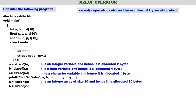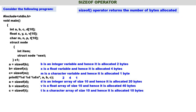Next b is equal to sizeof(v). v is a float array which can store 10 elements. For one element you require 4 bytes, for 10 elements you require 40 bytes. v is a float array of size 10 and hence it is allocated 40 bytes. sizeof(v) is 40, so 40 will be stored in b. c is equal to sizeof(t). t is a character array which can store 10 elements. For one element you require 1 byte, so for 10 elements you require 10 bytes. sizeof(t) is 10, so 10 is stored in c. printf a, b, c will print 20, 40, and 10.